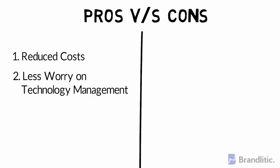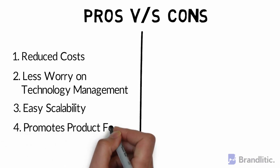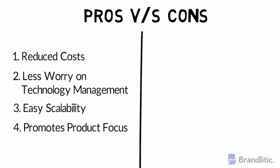2. Less worry on technology management. Time to say goodbye to applying latest updates, because you'll be using servers that are being managed by a third-party, so it's their job to keep up with the technology, updates, and fix bugs. 3. Easy scalability — give up the thought about provisioning the infrastructure, as it automatically scales if traffic spikes. 4. Promotes product focus — as you say goodbye to all your worries, now you can spend more time and effort to improve your customer experience.